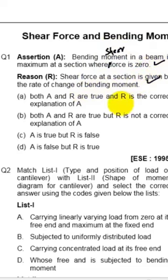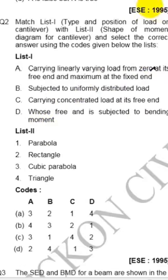Both are correct and R is the correct explanation of A. So this becomes a simple question — both A and R are true and R is the correct explanation of A.